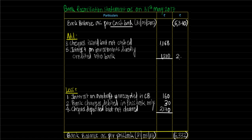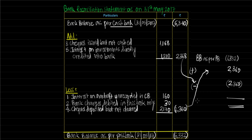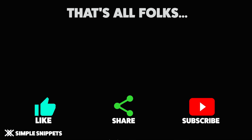We take the totals of both columns — additions of Rs 2,368 and deductions of Rs 2,360. To cross-check: Rs 6,340 negative plus Rs 2,368 minus Rs 2,360 comes to Rs 6,332, which matches the bank overdraft as per passbook. If we had started with bank balance as per passbook — that is Rs 6,332 overdraft — we would add all those transactions that were deducted (Rs 2,360) and deduct all those that were added (Rs 2,368), and we would land on bank balance as per cashbook of Rs 6,340 overdraft. That's all for this tutorial — keep watching, share the videos, and don't forget to subscribe to our channel. Peace!